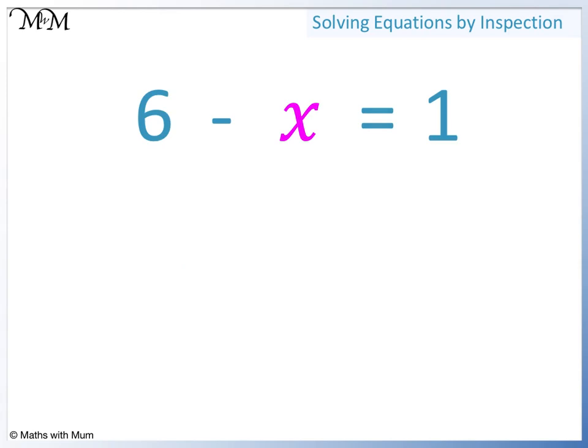6 minus x equals 1. Here we are looking for a number that when it is subtracted from 6 we get 1. 6 minus 5 equals 1. So x must be 5.